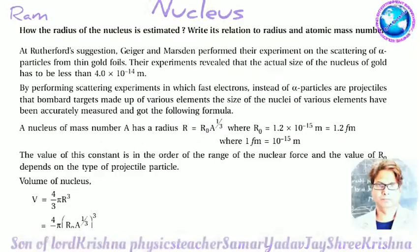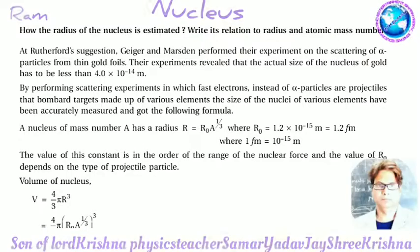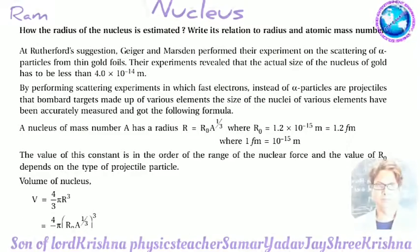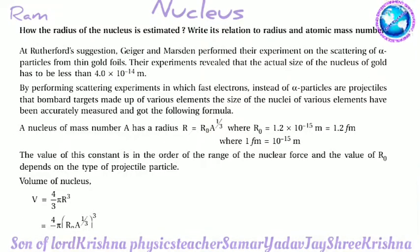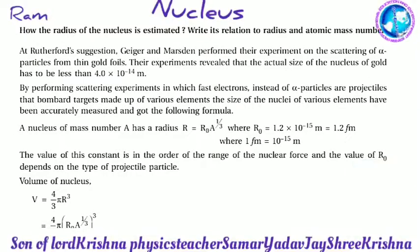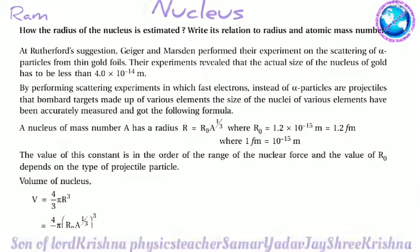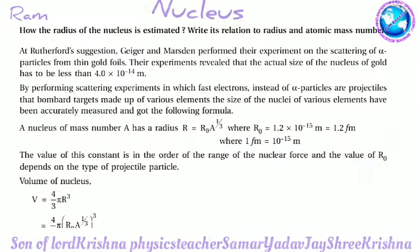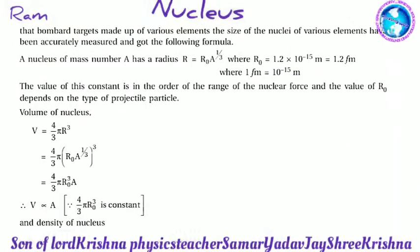Here 1 fermi = 10⁻¹⁵ m. The value of the constant R₀ is in the order of the range of nuclear force, and the value of R₀ depends on the type of projectile particle.